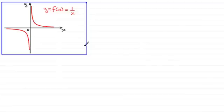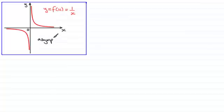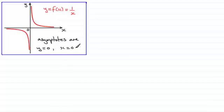Now we get horizontal and vertical asymptotes when we take, for instance, the graph y equals f of x, which equals 1 over x. You'll notice that the curve approaches the x-axis but never crosses it, and it approaches the y-axis and never crosses it. So if we're asked to find the equations of the asymptotes, the asymptotes are the x-axis, which has the equation y equals 0, and the y-axis, which has the equation x equals 0. Now if you're not sure why these lines are asymptotes, I will show you this towards the end of the tutorial. But for the time being, let's just work off this particular graph.